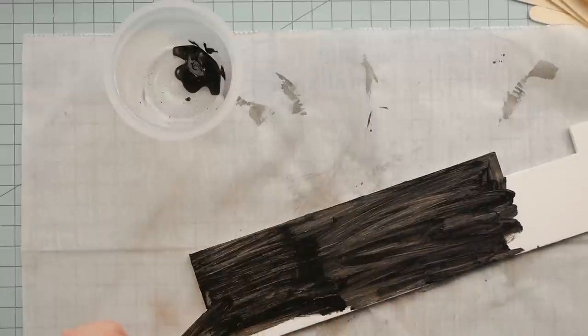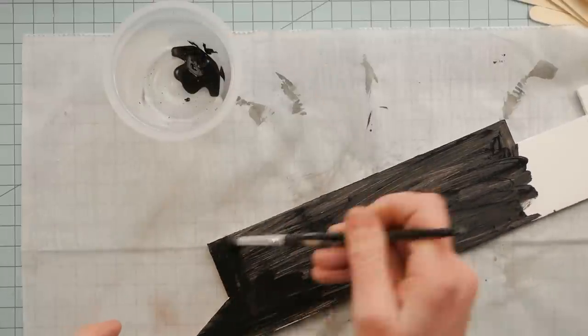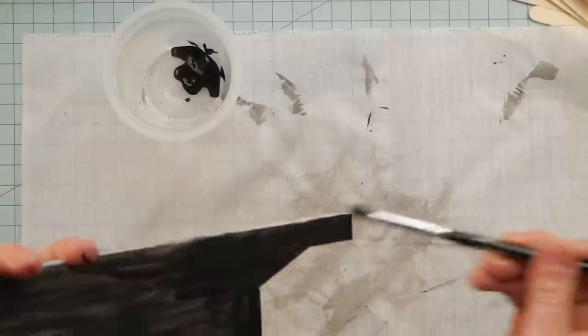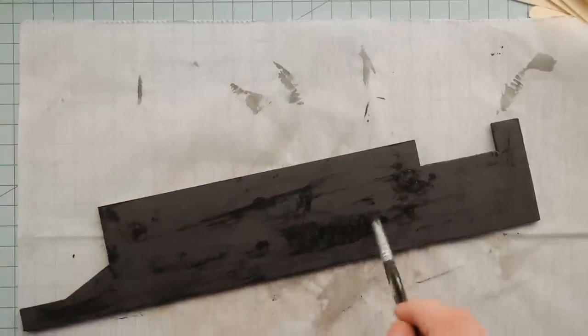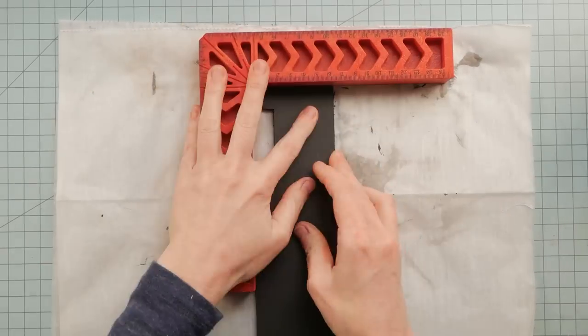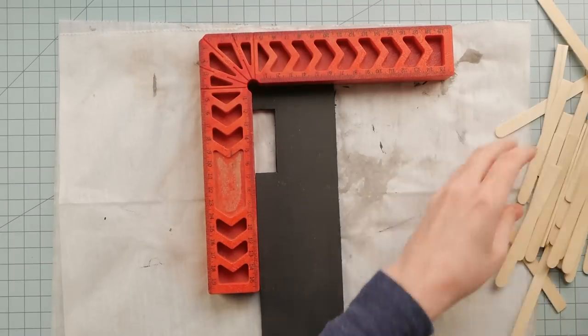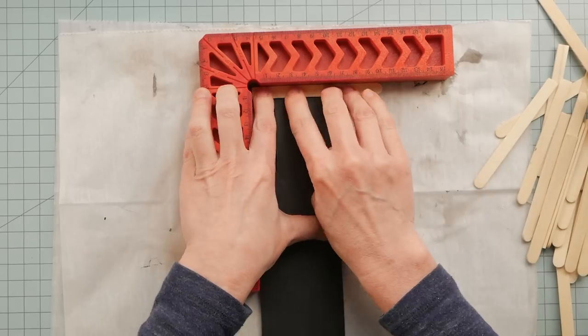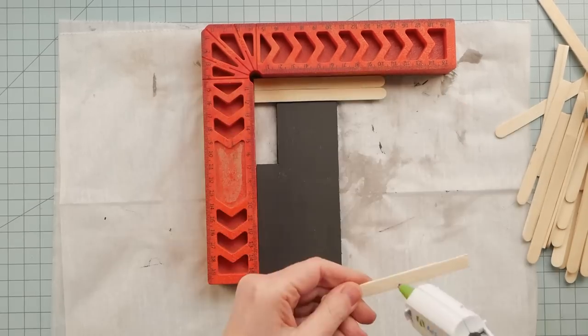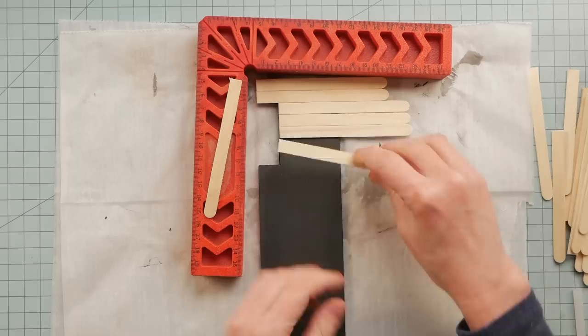And it's foam core board, I think it's like a quarter of an inch thick. And I paint the background black so that if you see anything through the popsicle sticks, which are going to be floorboards, it won't be white.